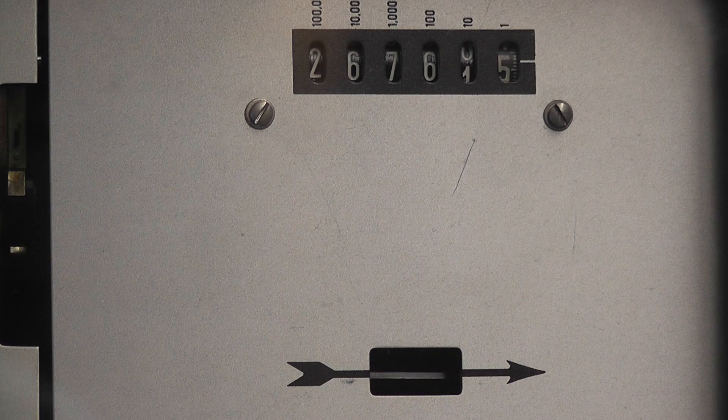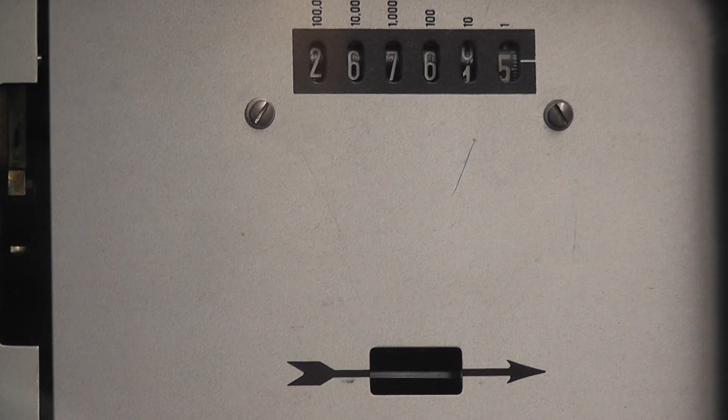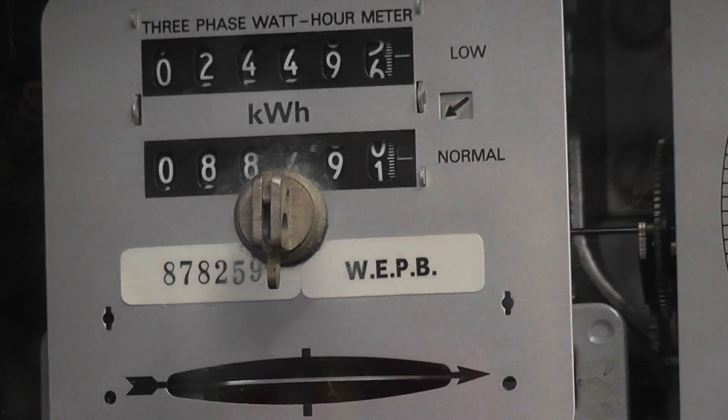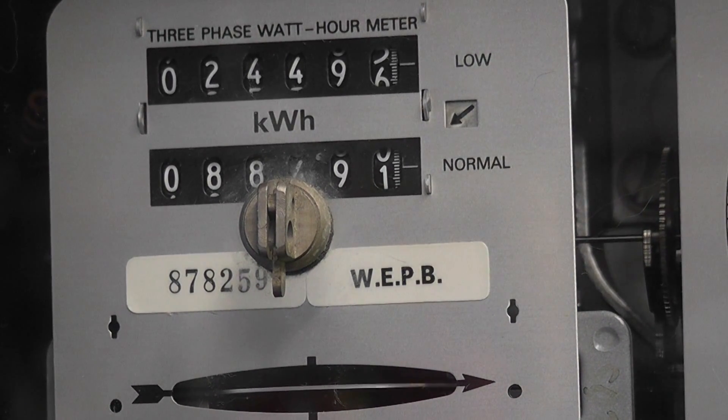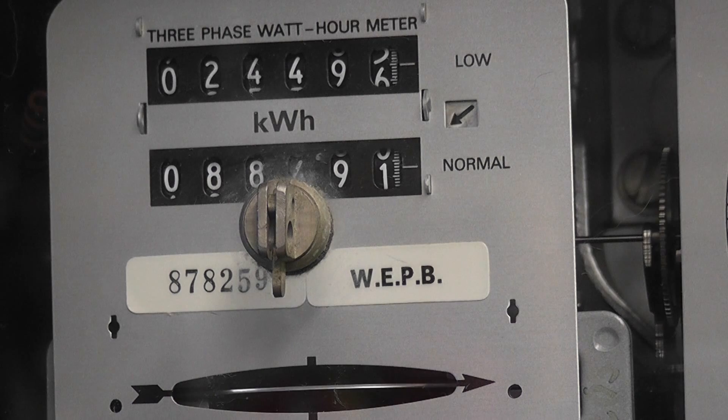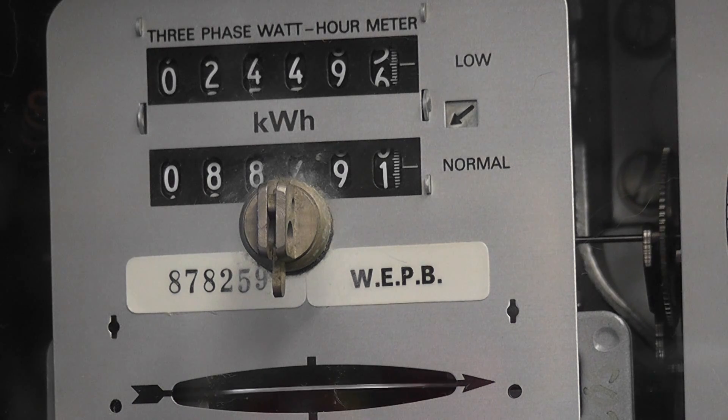That's the KVARH register. Here we got the kilowatt hour register, which runs very fast. It's a resistive load like a heater, it's nearly a unity power factor.